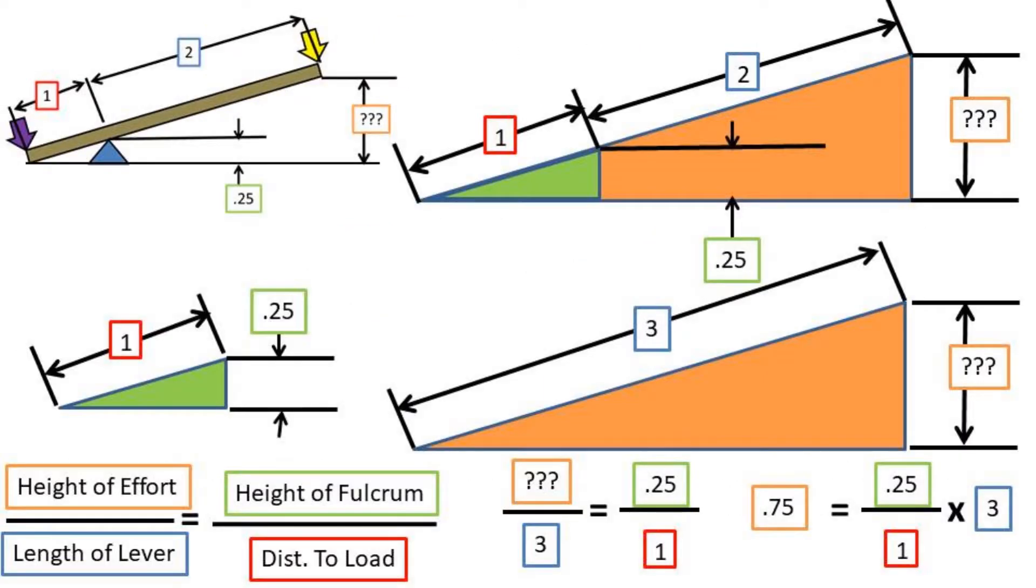Using the rule of similar triangles we take the height of the effort, which is the unknown, over the length of the lever and set it equal to the height of the fulcrum over the distance to the load. Doing some algebra to rearrange this problem we get 0.75 meters as the height of the effort. That concludes this video.